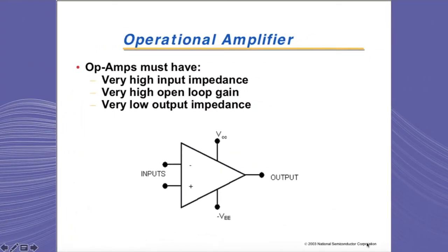Operational amplifiers in general have five pins. Two of those are inputs, two of the pins are supply pins, and finally there is an output pin. Some op-amps may have more pins for external compensation, some have shutdown pins, and some may have a differential output stage, but we are not going to cover those since this presentation is intended to cover the basics of op-amps.